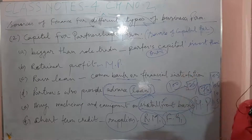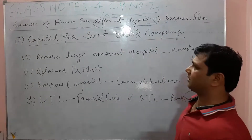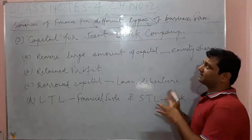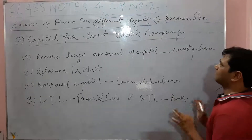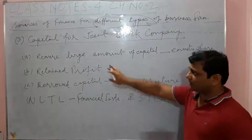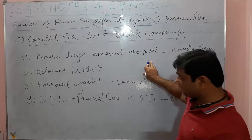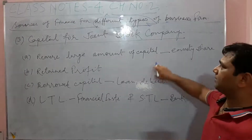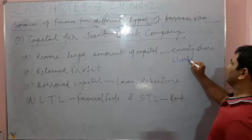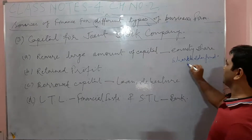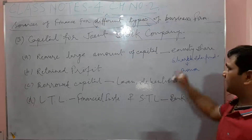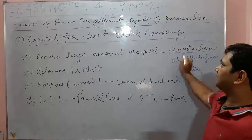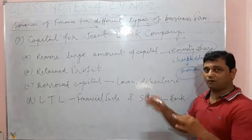Now the third topic: source of funds for joint stock company. The scope of a joint stock company is larger compared to sole proprietorship or partnership firm, requiring a large amount of capital. The first source is equity shares, which represent shareholder funds — this is also own capital. In the form of equity shares, the company can raise a larger amount via the open market.